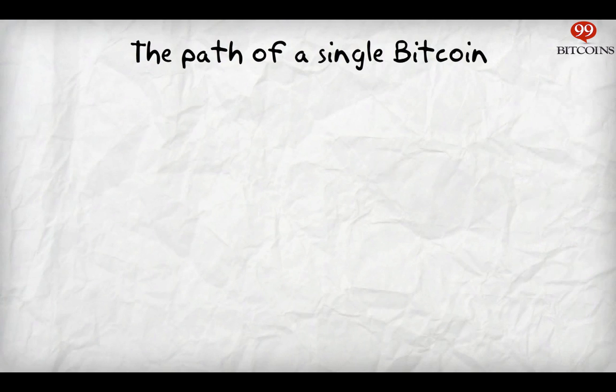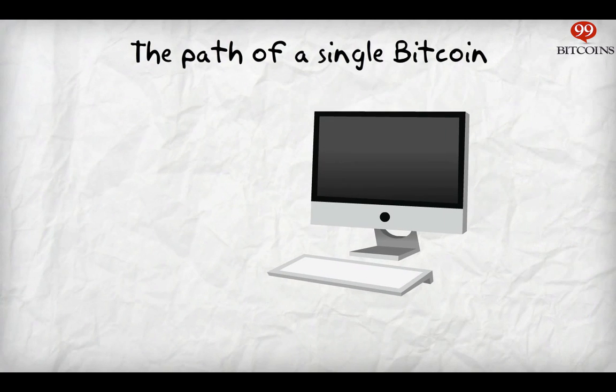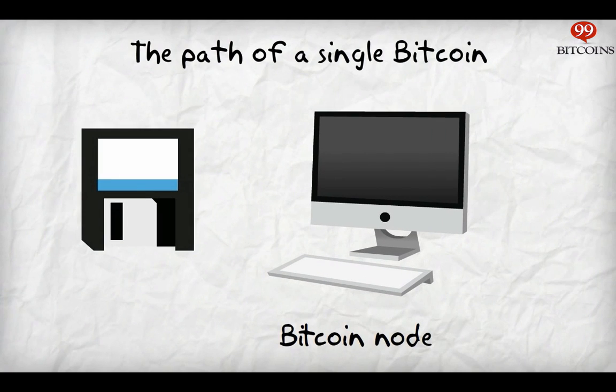To begin with, let's talk about Bitcoin nodes. Nodes are just computers which are connected to the internet and hold a complete copy of the blockchain. If you have a Bitcoin wallet on your computer, you're probably a node yourself.